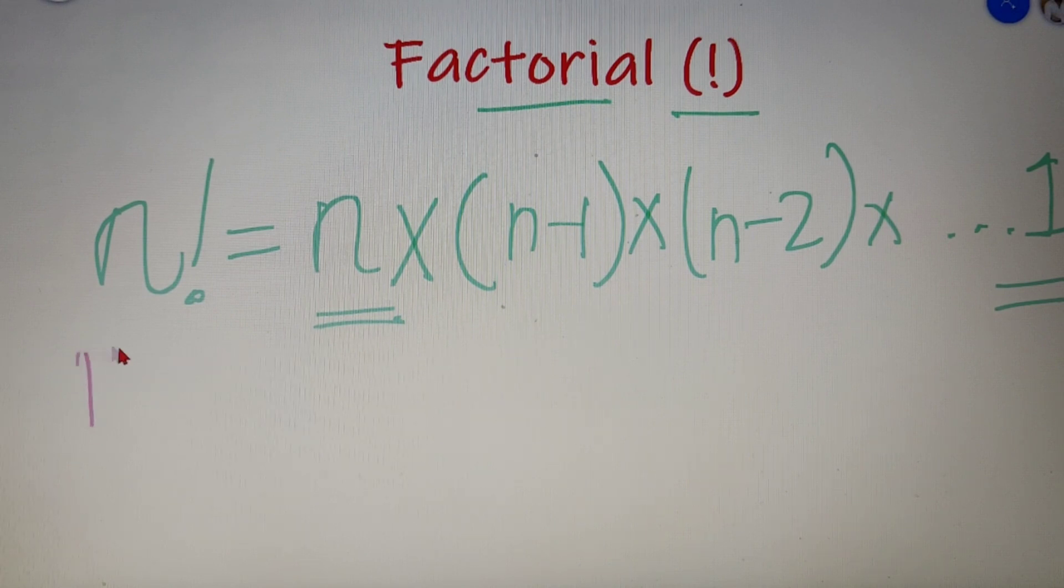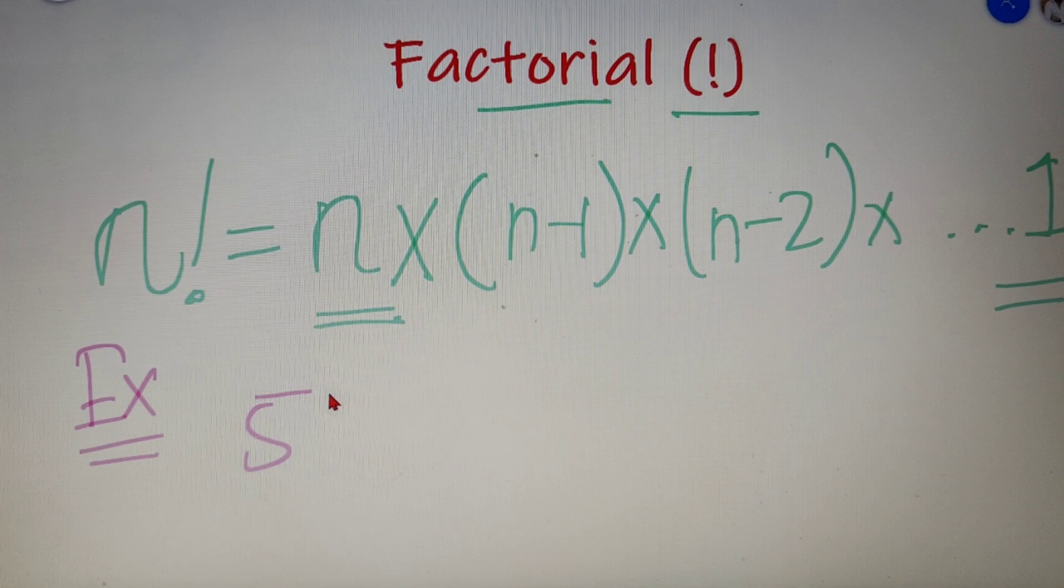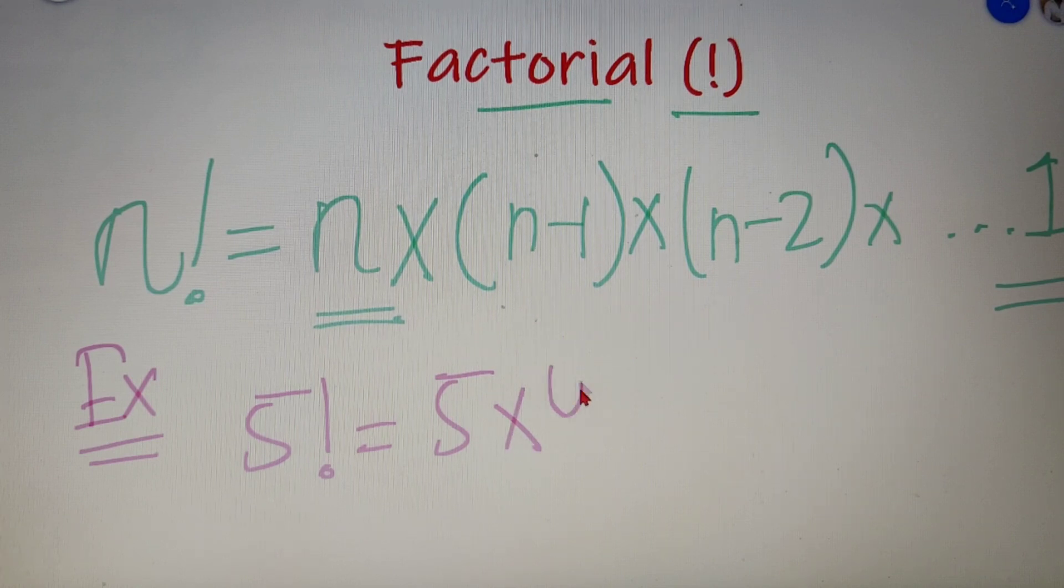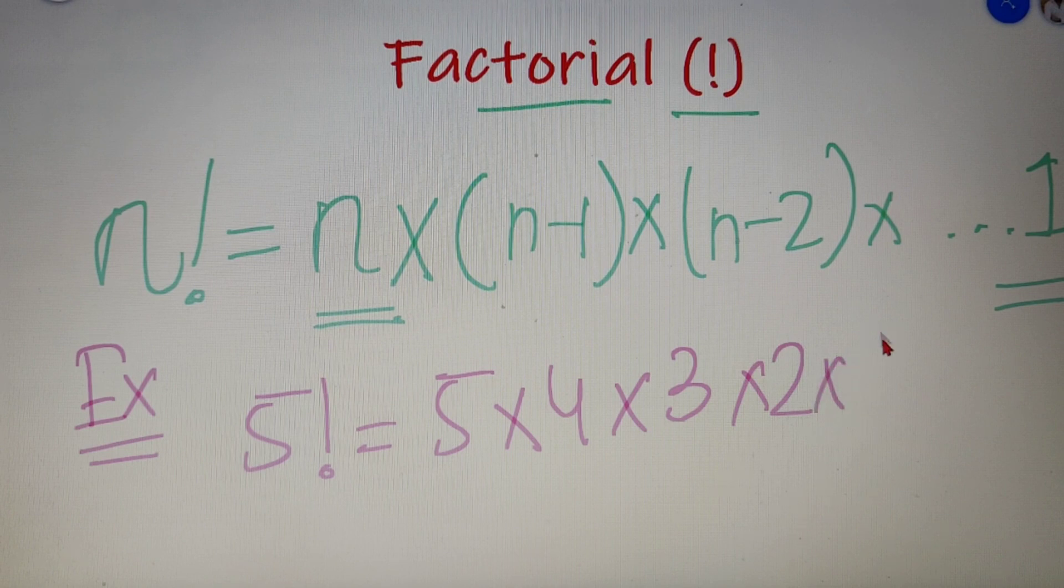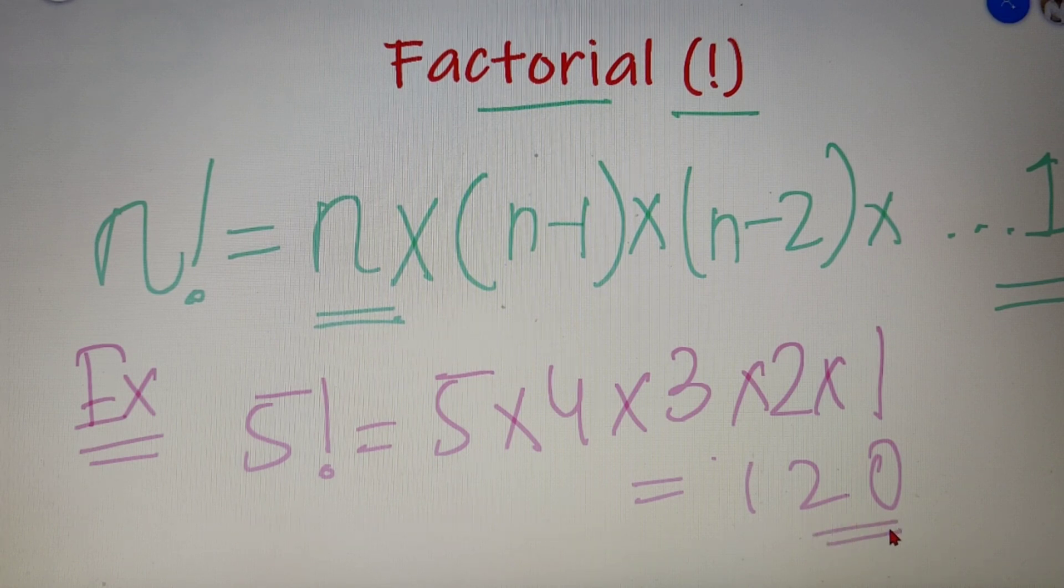So let's take an example so that you will understand the concept a bit better. Suppose we have the number 5 and we have to calculate its factorial. So 5 factorial will be product of all the numbers from 5 to the number 1. So 5 into 4 into 3 into 2 into 1 and this value comes out to be 120.